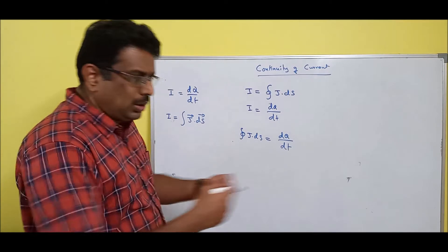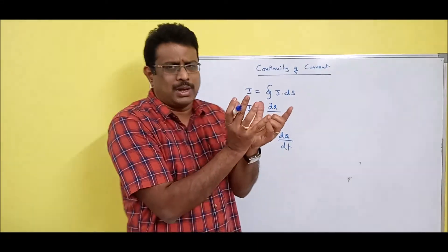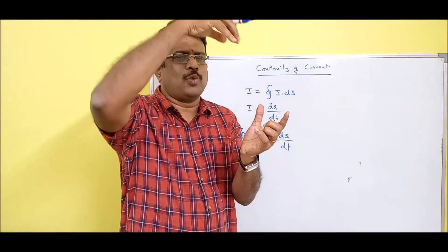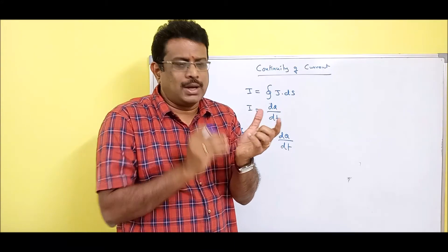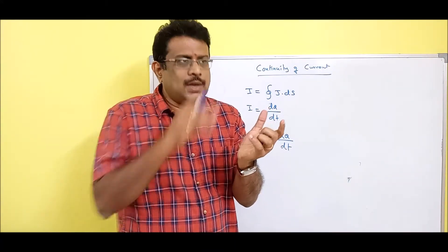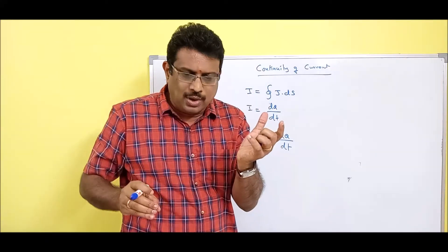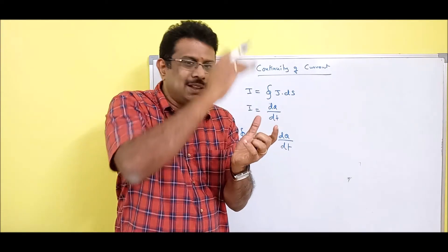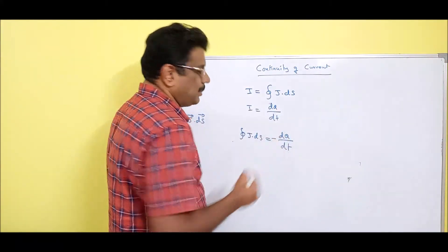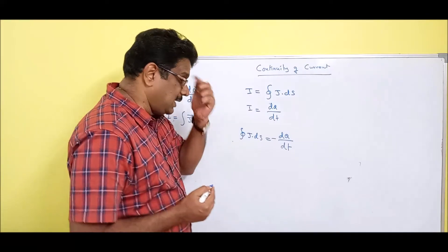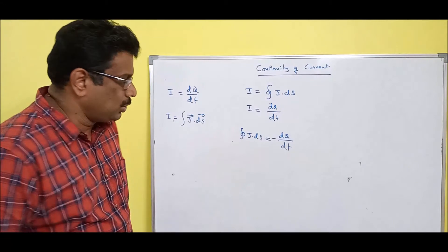Outward flow is equal to the decrease — compensation, reduction. Think of a small vessel with one liter of water — put a hole, water comes out, so the water level reduces. Outward flow of water is compensated by a reduction in the water inside. So I mention a minus sign here, and that minus means reduction, not a negative value.